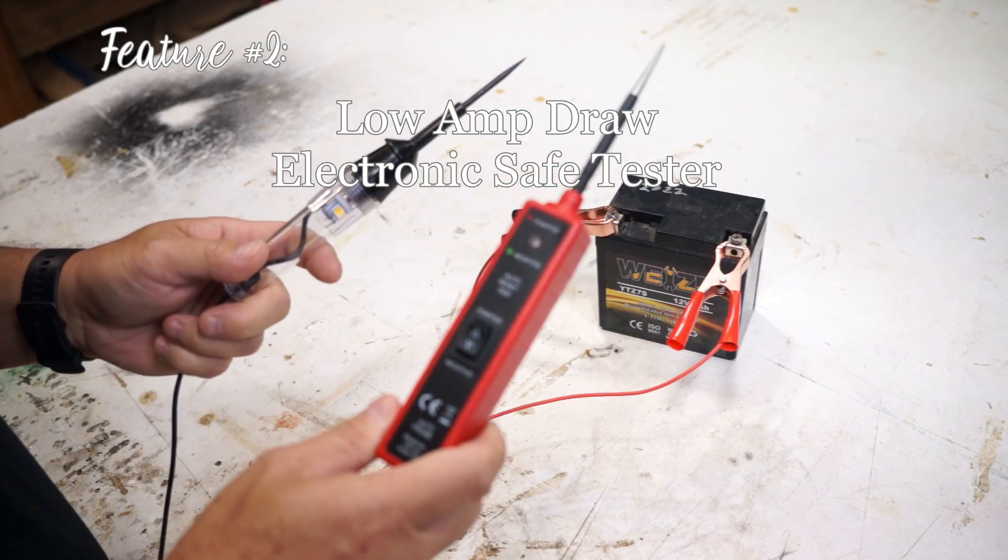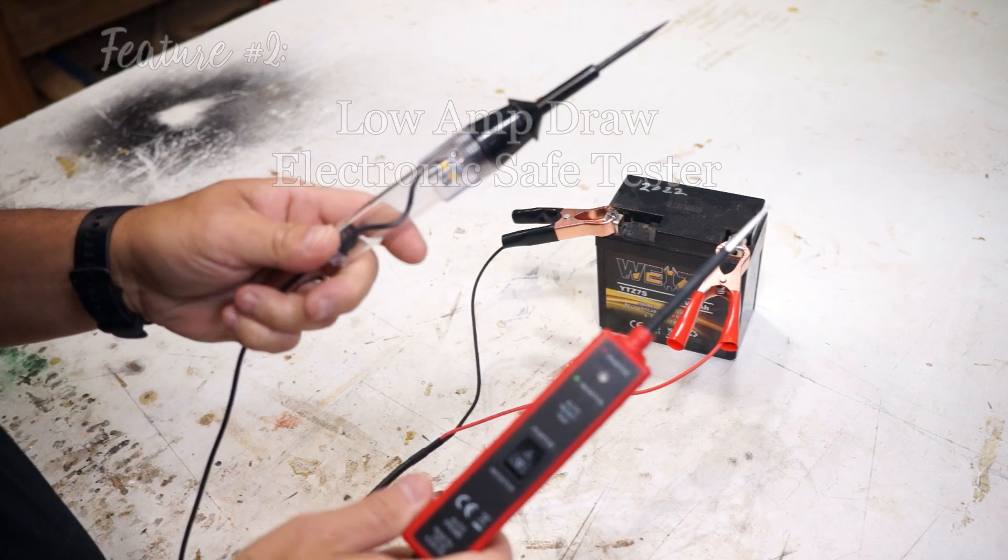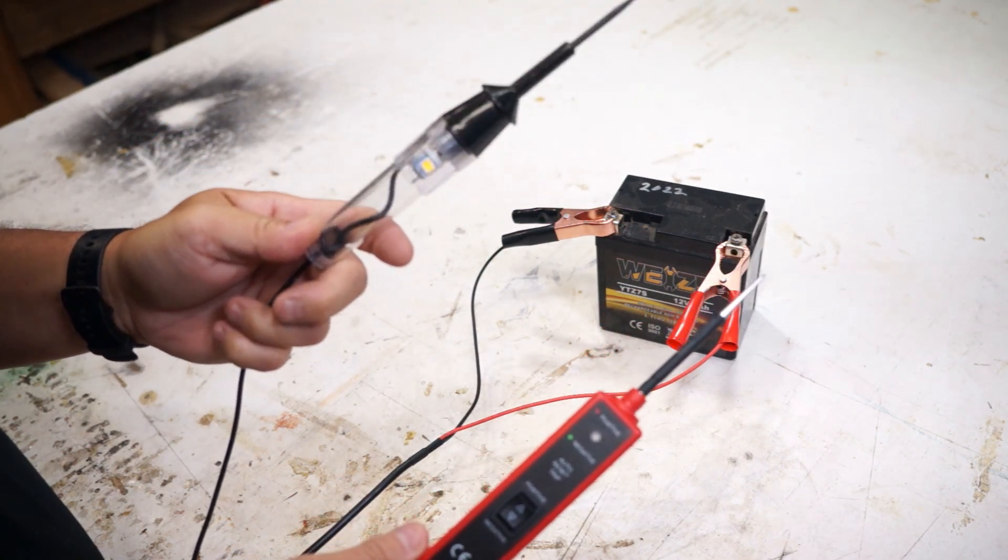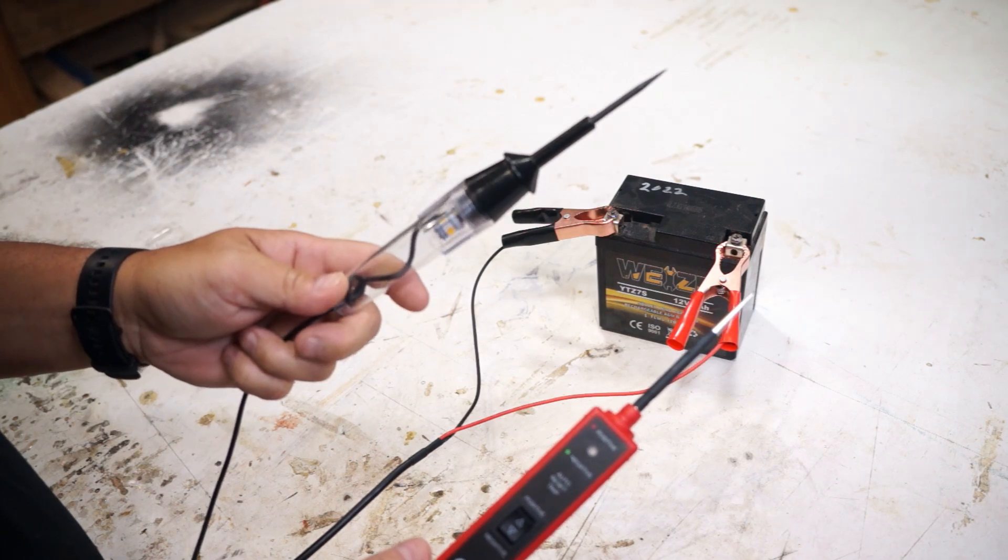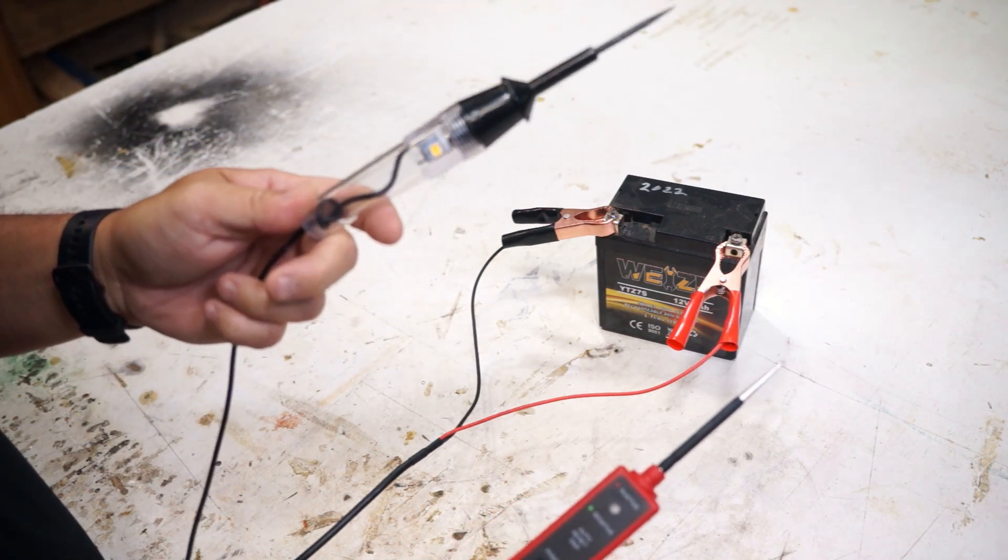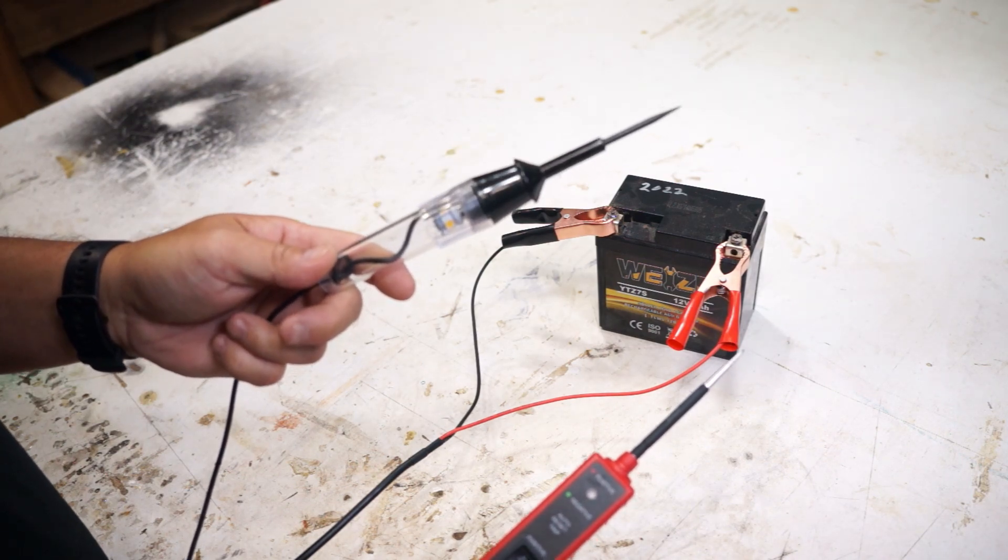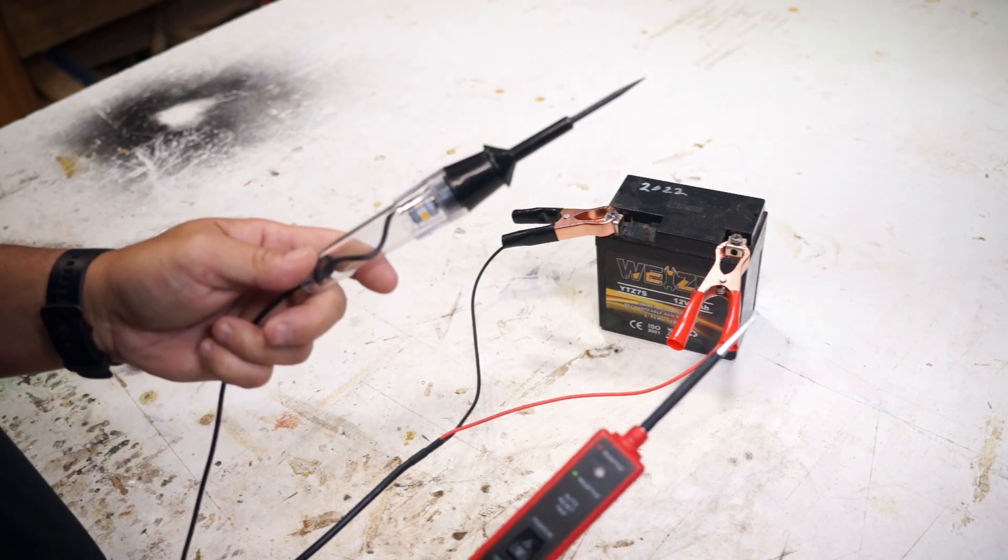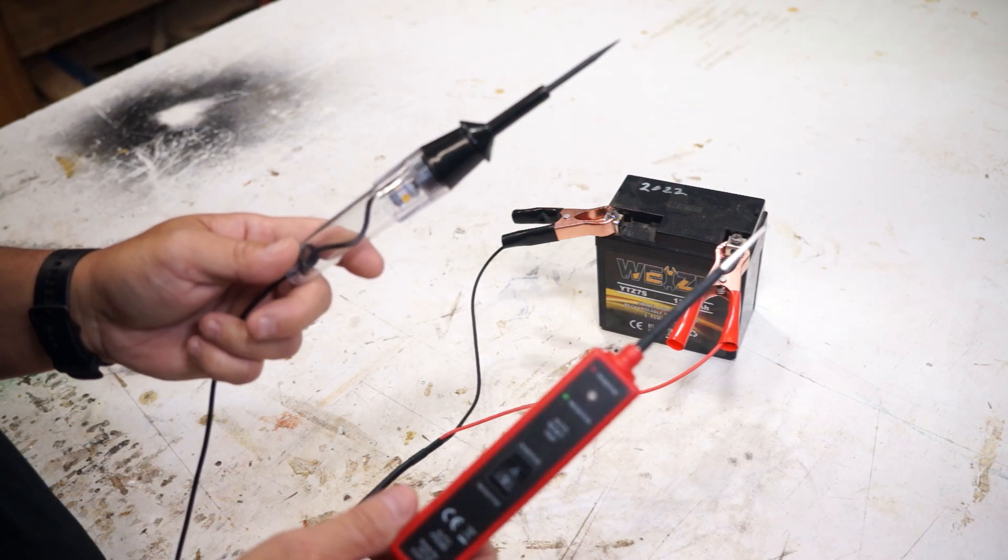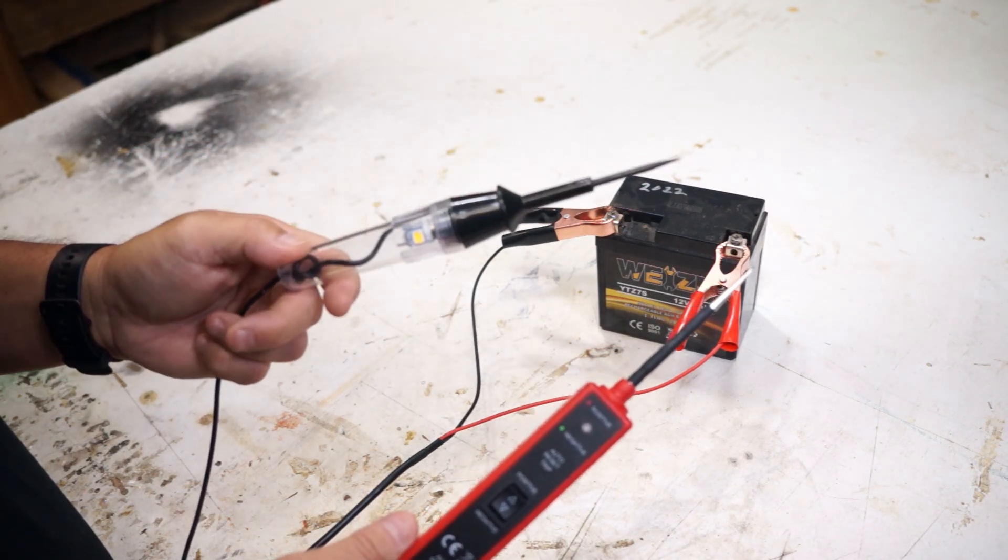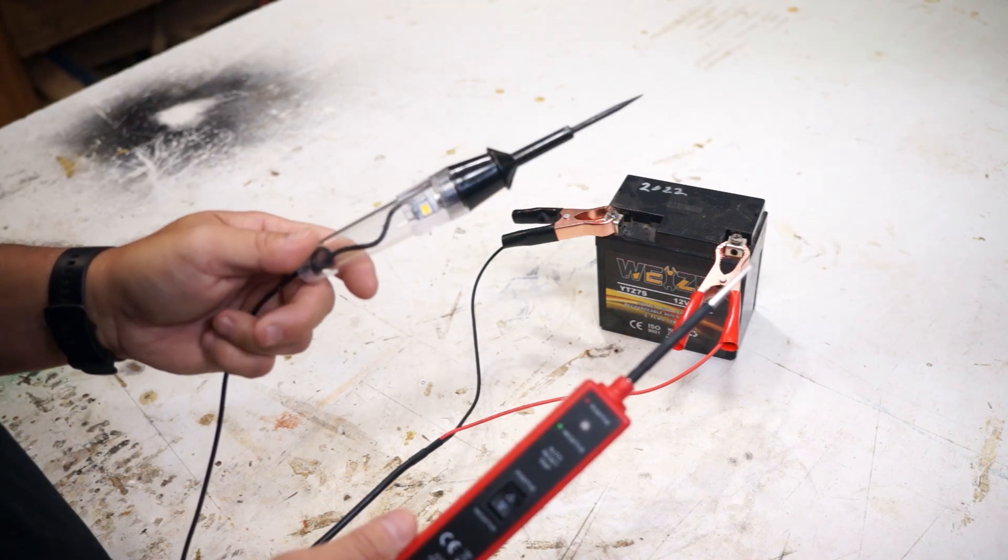For feature number two of why I like the power probe over the old circuit tester is that circuit testers used to come with an incandescent light, and that had about a 270 milliamp draw on the circuit. With modern technology and more sensitive electronic equipment, that's not acceptable. We'll go into the latter half of the video and I'll explain why.